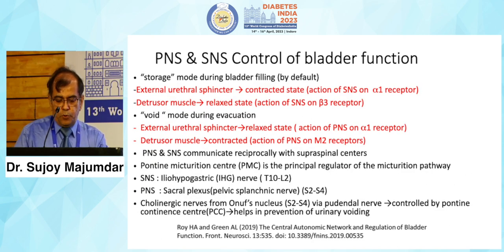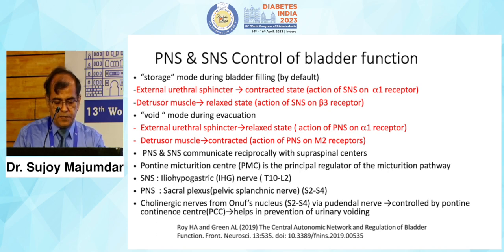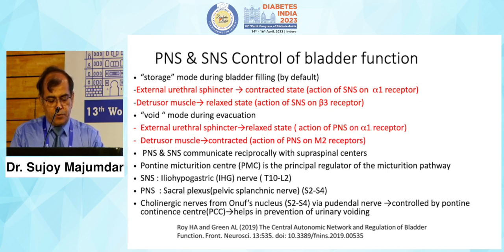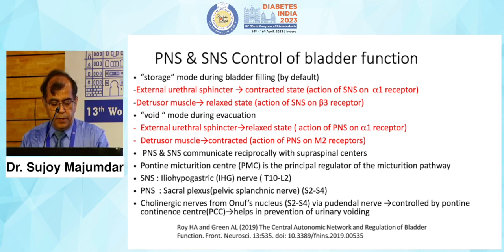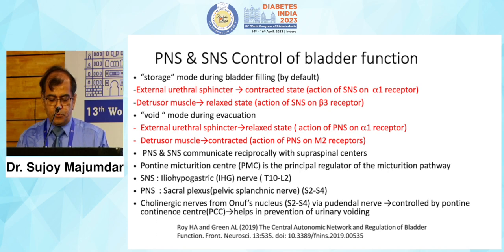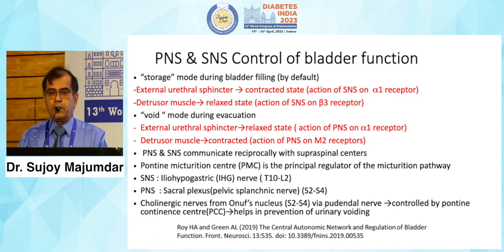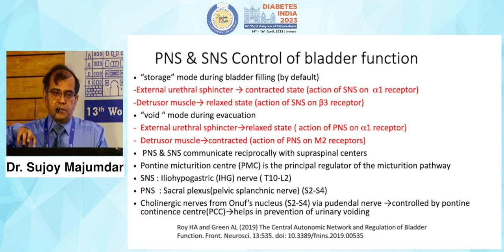The storage mode is driven by the sympathetic nervous system, and the void mode by the parasympathetic system. The pontine micturition center is the principal modulator of the micturition pathway. Through sympathetic, parasympathetic, and cholinergic nerves from Onuf's nucleus, it forms a sacral plexus around S2–S4 via the pudendal nerves. The pudendal nerves serve as a voluntary control center for prevention of incontinence.